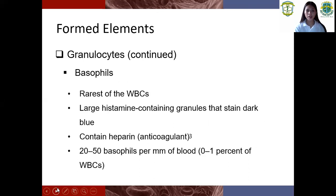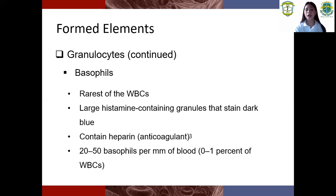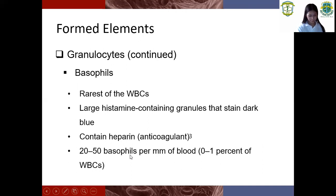So the next one is basophils. So what is basophils? Basophils are the rarest of the white blood cells, with large histamine-containing granules that stain dark blue. They contain heparin. Normal range is 20 to 50 basophils.